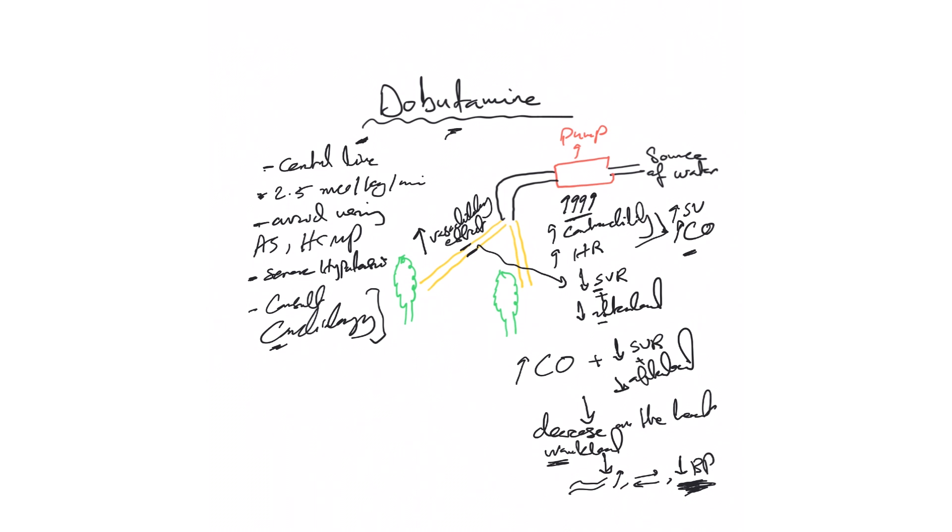Watch for tachyarrhythmias, afib, ventricular tachycardia, V-fib. Also look for anybody on monoamine oxidase inhibitors because the combination can lead to prolonged hypotension. Mainly these are antidepressants and linezolid have some of that, so you need to pay attention to that as well.